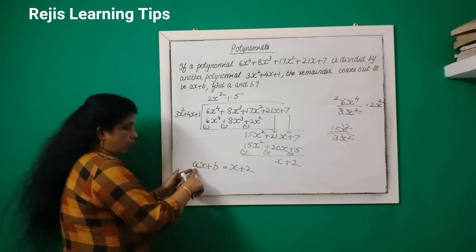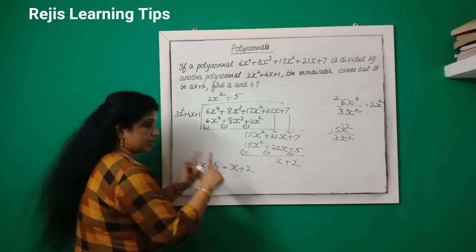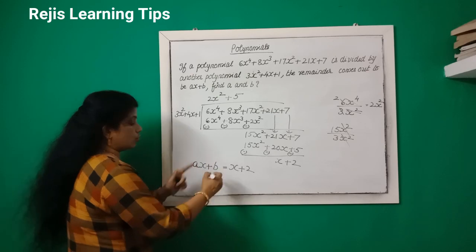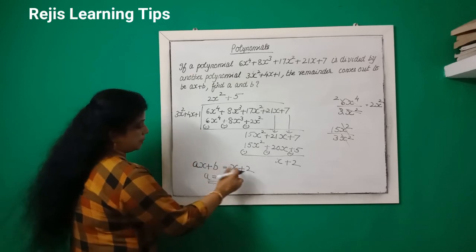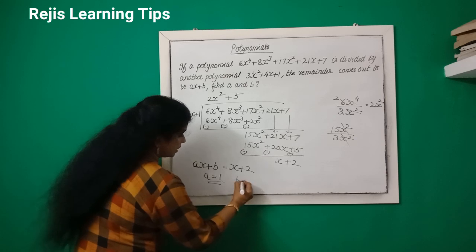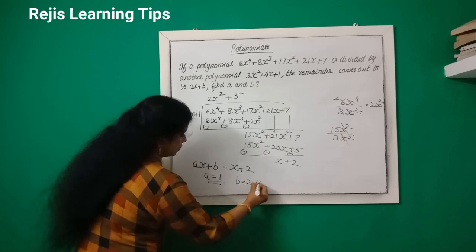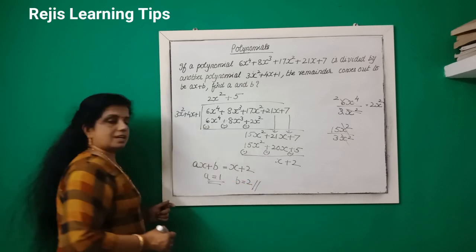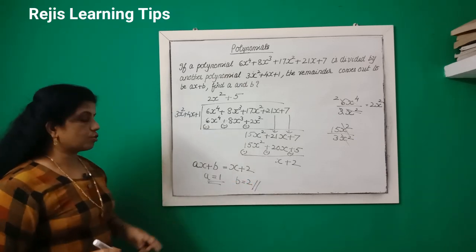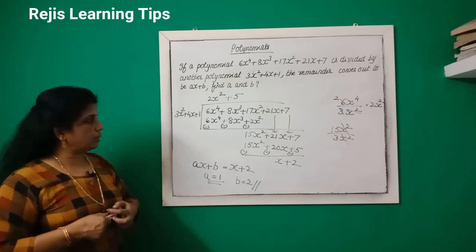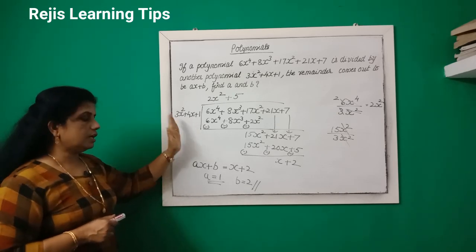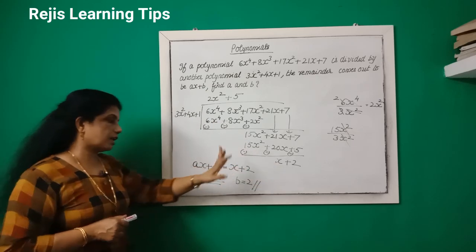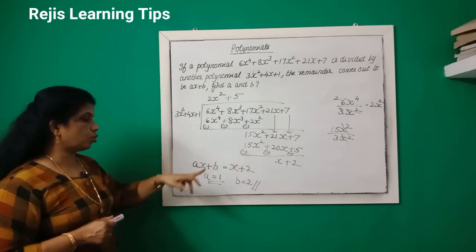Comparing coefficients: the coefficient of x gives a = 1, and comparing the constant term gives b = 2. So a = 1 and b = 2. The remainder is x + 2.